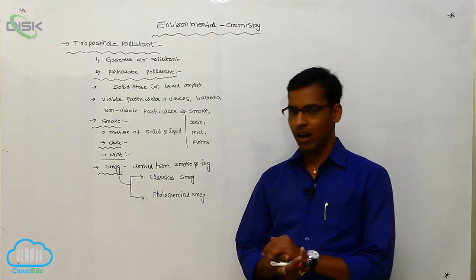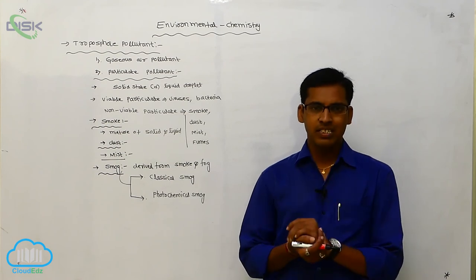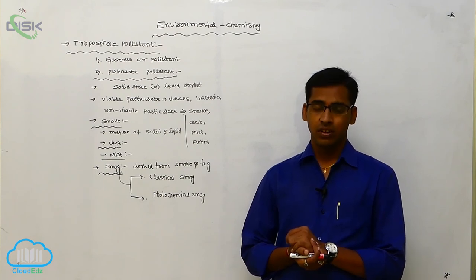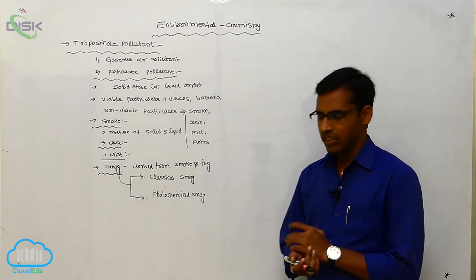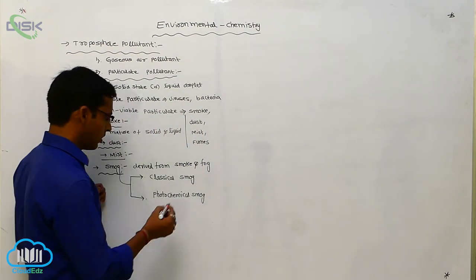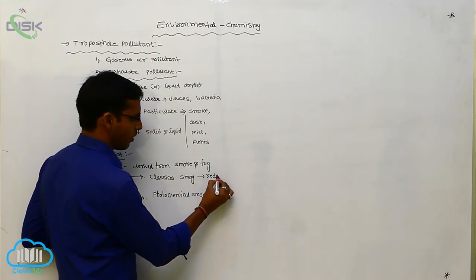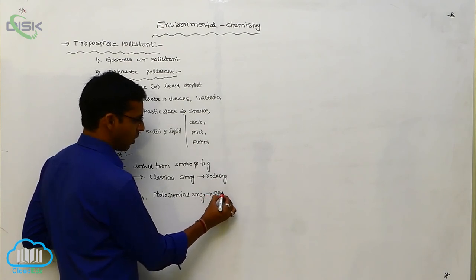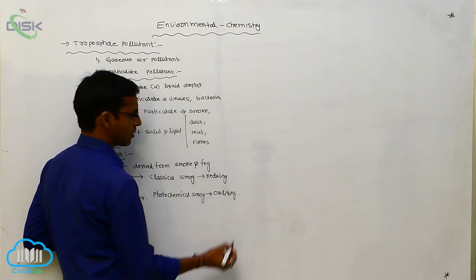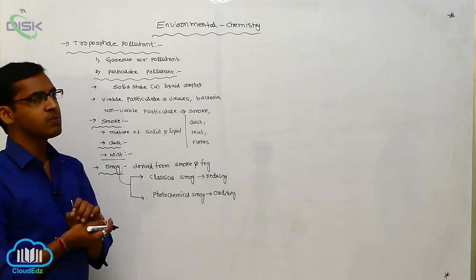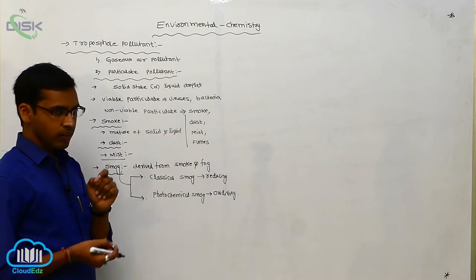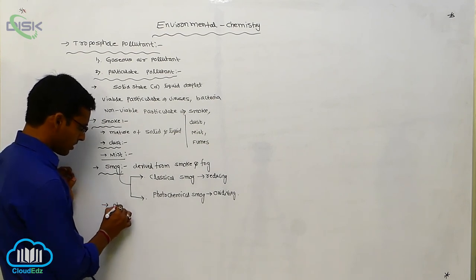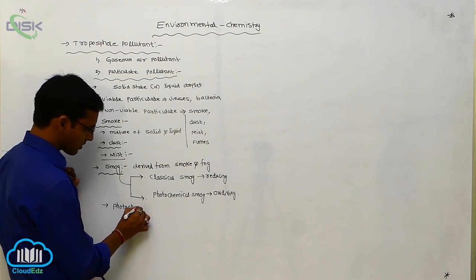Classical smog is a mixture of reducing agents — it is also called reducing smog. Photochemical smog is an oxidizing smog because its mixture involves oxidation. We will discuss photochemical smog in detail.